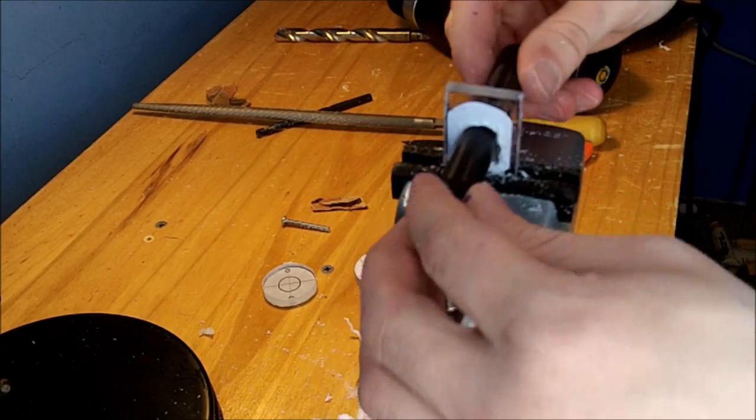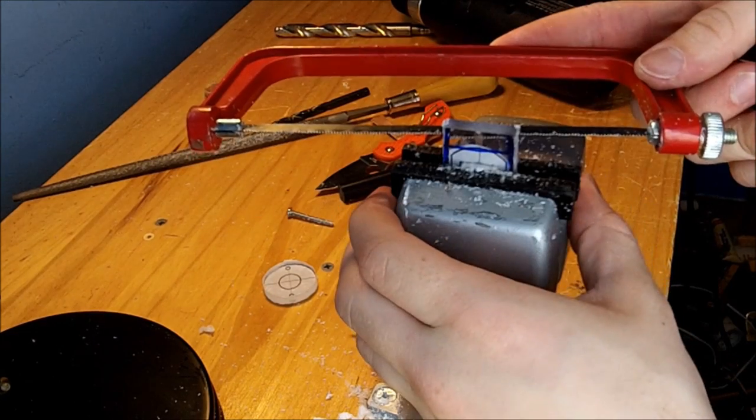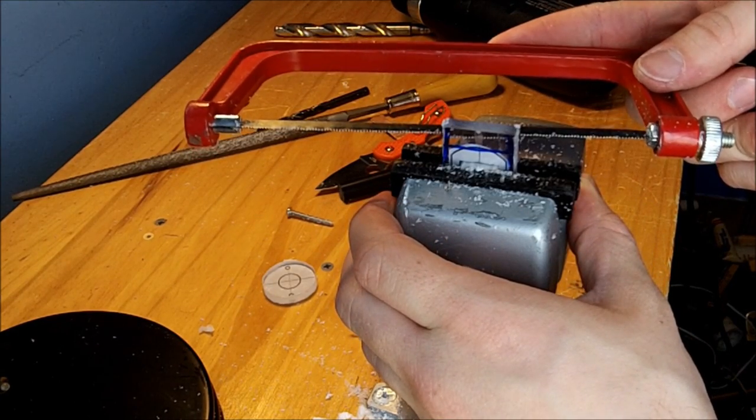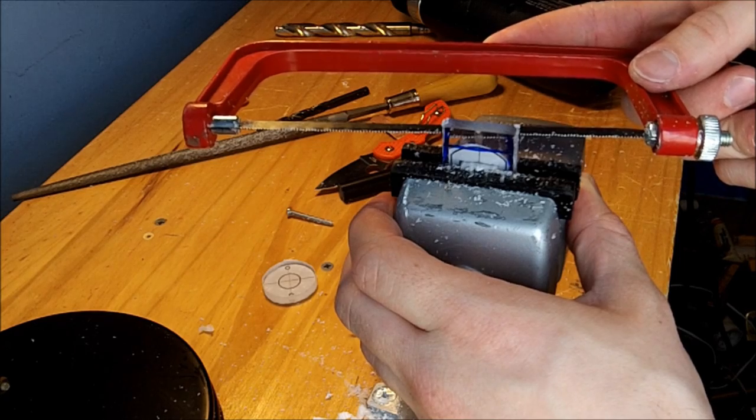That seems to work pretty good. Now continue sawing and sanding the outer perimeter until the desired shape is achieved.